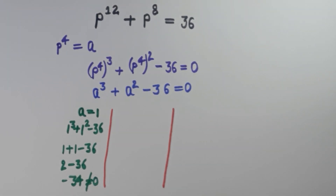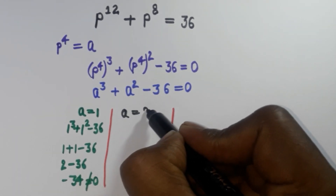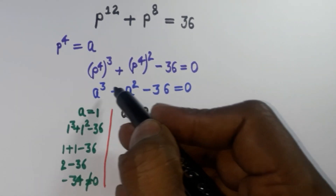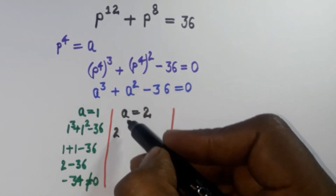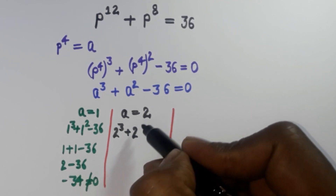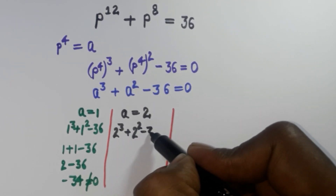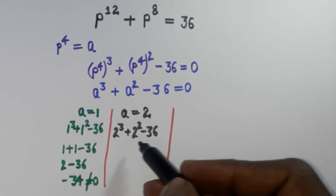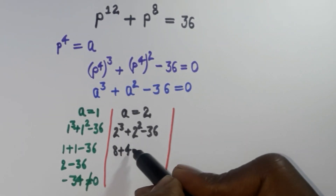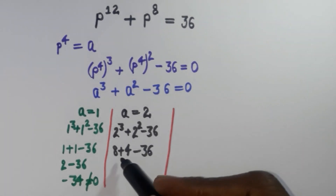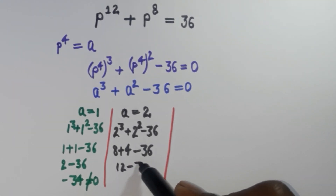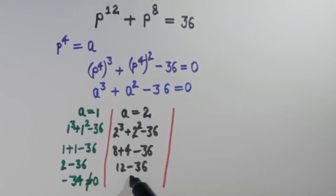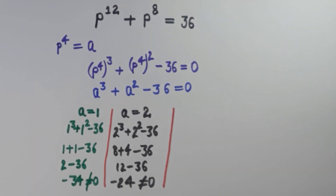Then we have a equal to 2. Putting a equal to 2: 2 to the power 3 plus 2 to the power 2 minus 36. That gives 8 plus 4 minus 36, which is minus 24. That is also not equal to 0, so we are neglecting this one as well.